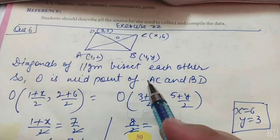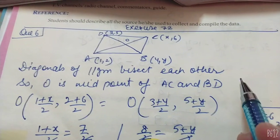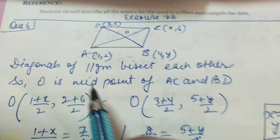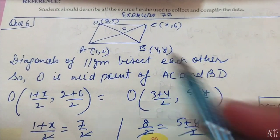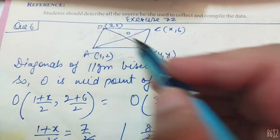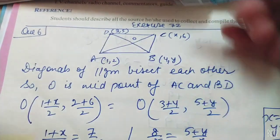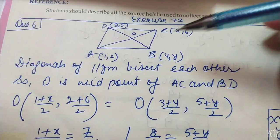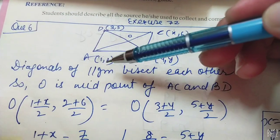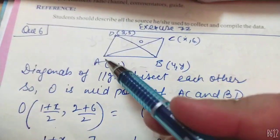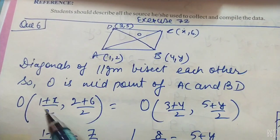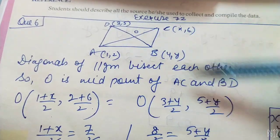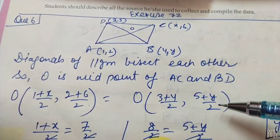तो X और Y निकालने के लिए — you know कि diagonals जो हैं parallelogram के, वो bisect करते हैं एक दूसरे को. अगर diagonal bisect करते हैं, that means O midpoint है — O is the midpoint of AC and BD. AC का midpoint है O, और BD का midpoint है O. इसका midpoint निकालेंगे: (1 + X)/2 और (2 + 6)/2 along AC, और (4 + 3)/2 और (Y + 5)/2 along BD.